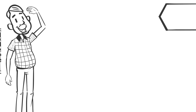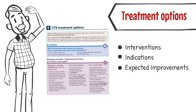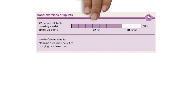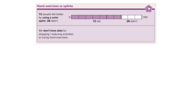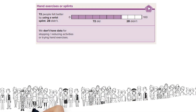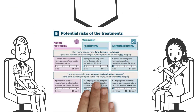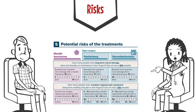Treatment options are clearly displayed with information about interventions, indications and expected improvements. For interventions where sufficient data is available, potential benefits are displayed as a rate of success out of 100 people. The potential risks of treatment options are also clearly displayed.